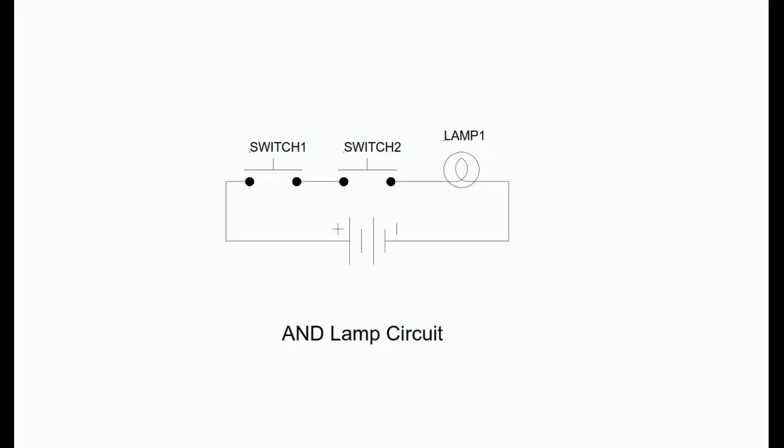Generally, when introducing a class to logical operations, an instructor uses the analogy of a series connection of two switches, a lamp, and a battery to illustrate the AND function. Relay logic allows this function to be represented this way.